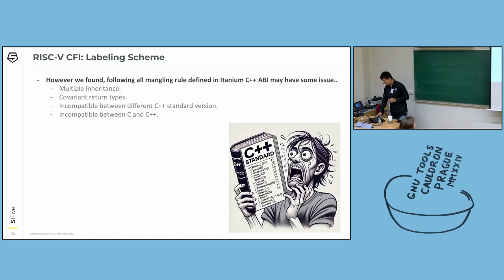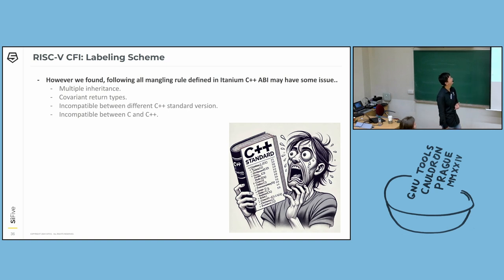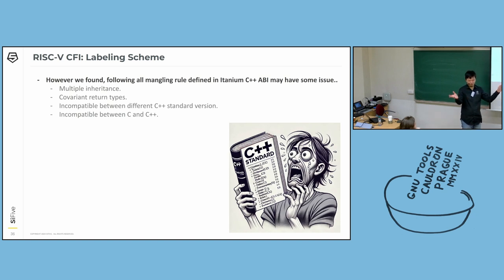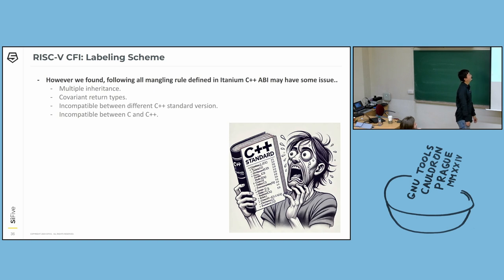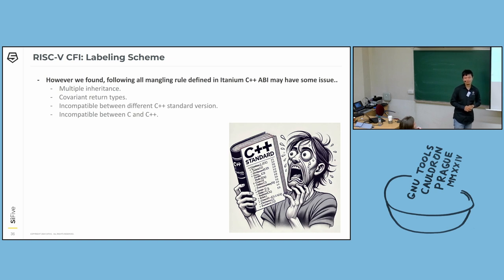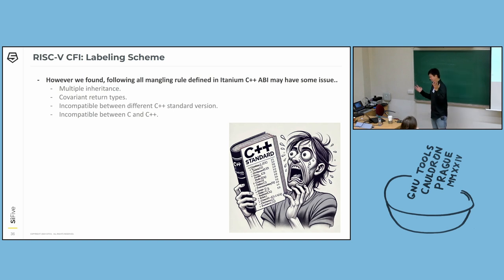Something may come to your mind: C++ already has a defined rule for this which is the Itanium C++ ABI mangling. So awesome, then we use that. But oh yeah, here's a but — C++ is really, really, really complicated. We thought optimistically at the beginning: just use that, and then we don't need to investigate what the rule is. But we found some interesting issues around C++: first, multiple inheritance; second, covariant return type; and also the mangling is not really compatible even between different C++ standards — there has been some evolution. And also C and C++ are not really compatible.